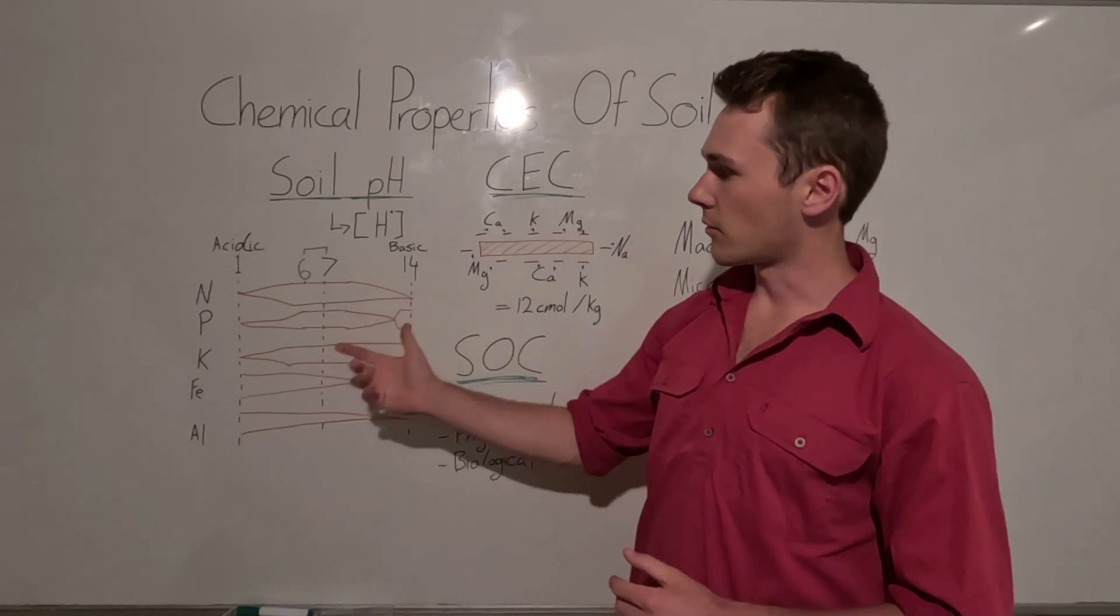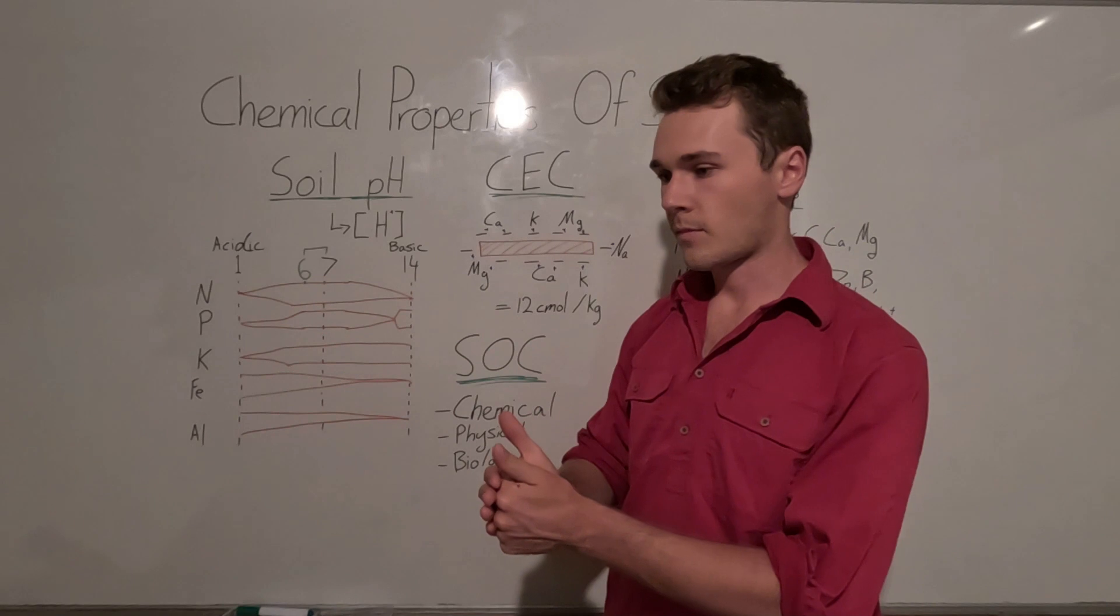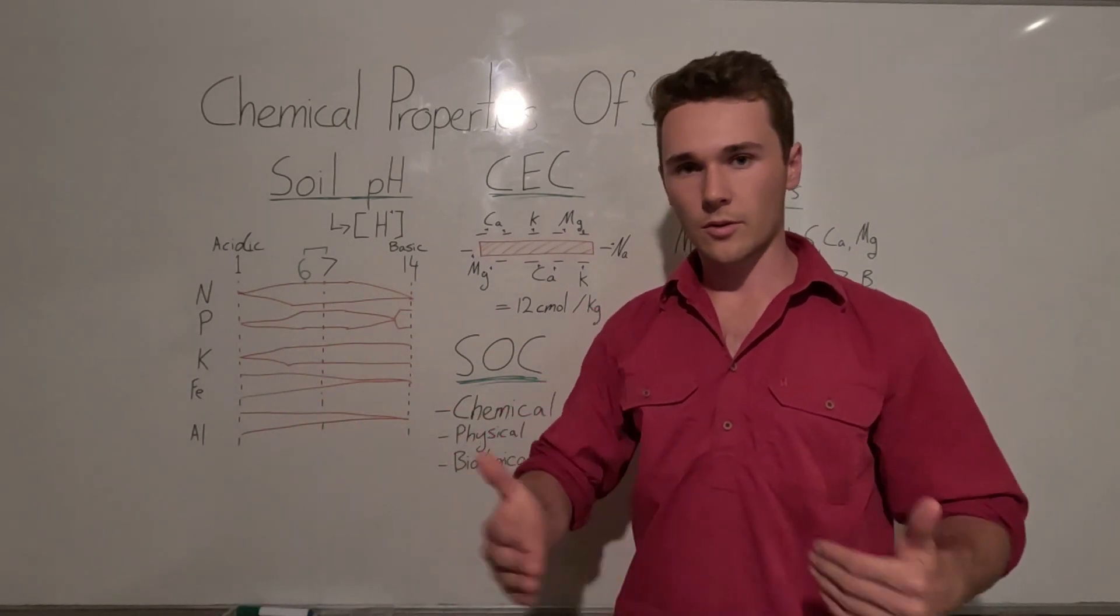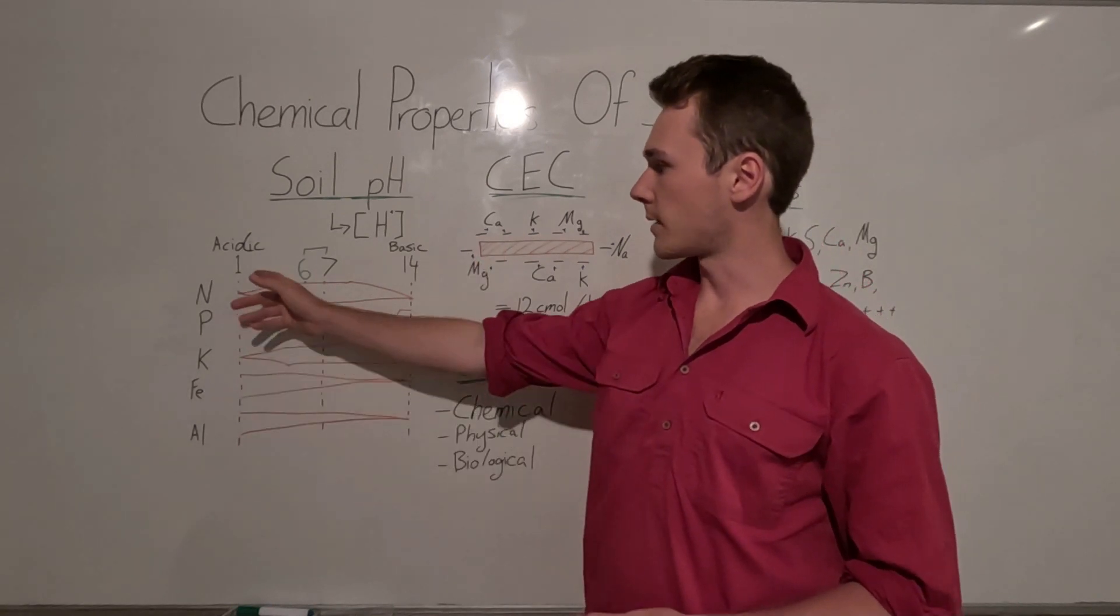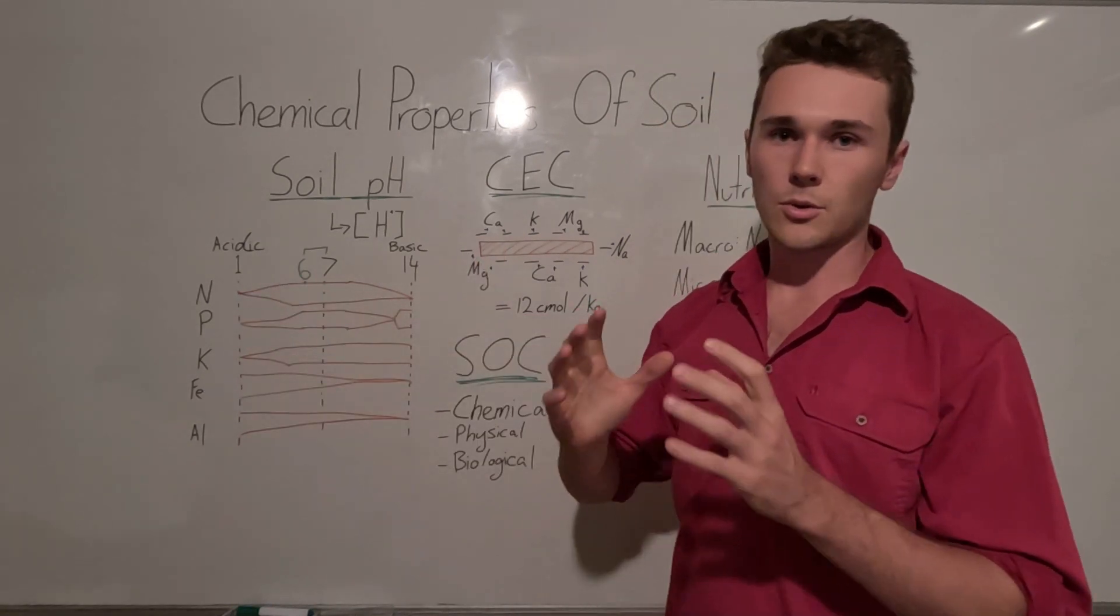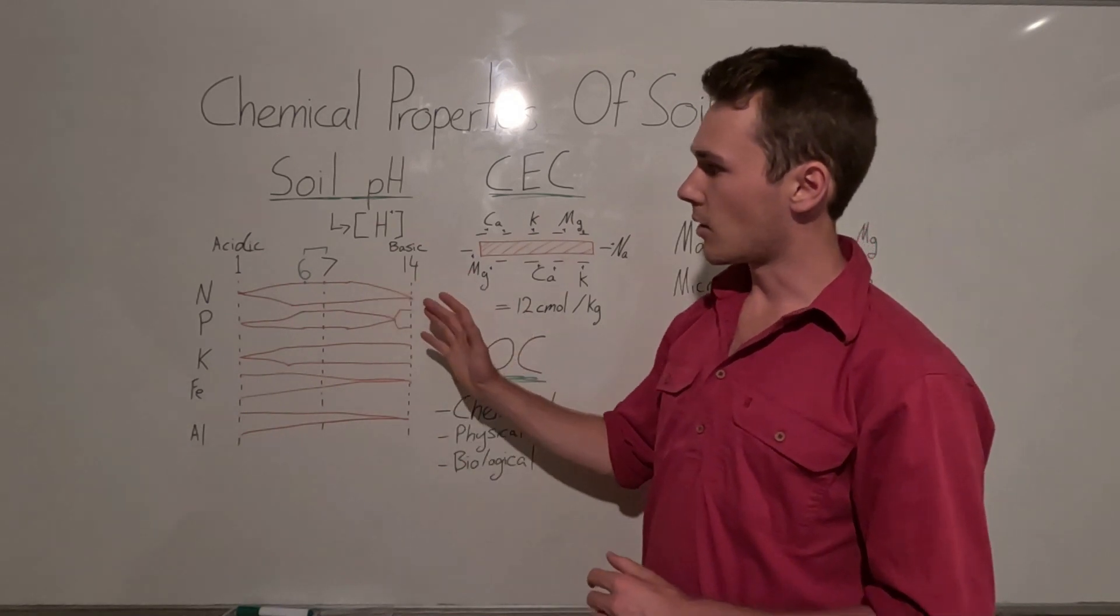It's a reverse logarithmic scale, which means the higher or the more hydrogen there is, the lower the score, and it's also logarithmic so there's a factor of 10 difference between each of these. Now each nutrient or element will have a different behavior at different ends of this spectrum.